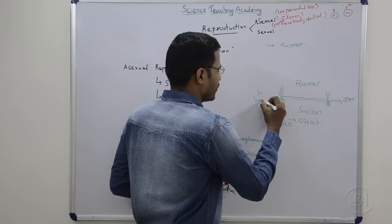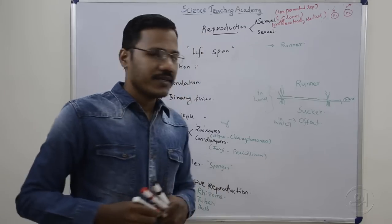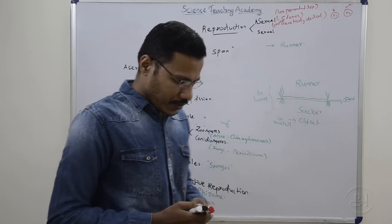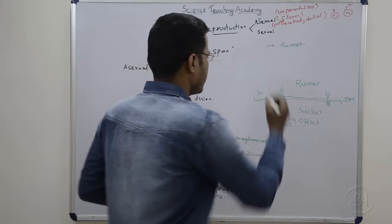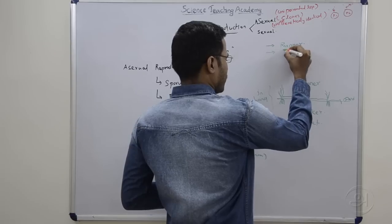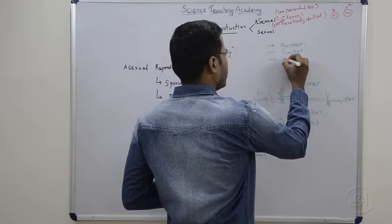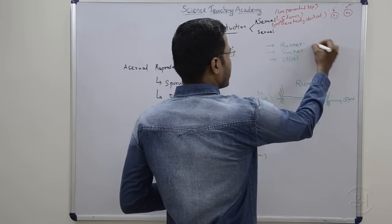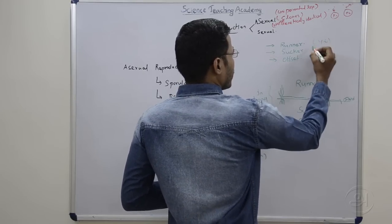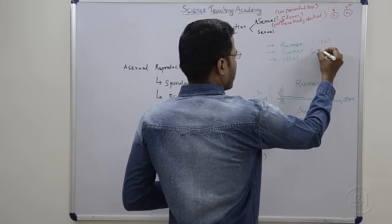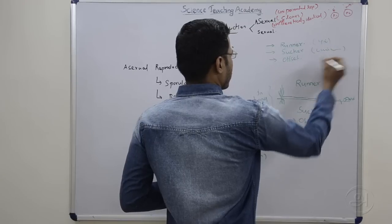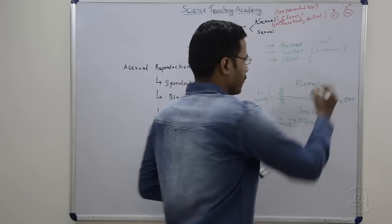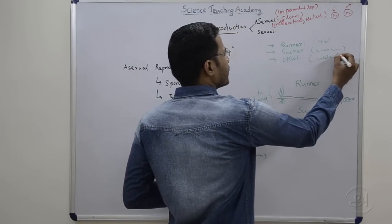These two are on land. Land plants have Runner and Sucker. Water plants have Offset. So this is a type of propagation. Sucker is Offset. Offset is a water plant. Runner example is Strawberry, Sucker example is Chrysanthemum, and Offset example is Water Hyacinth.